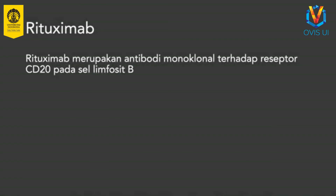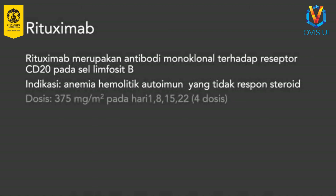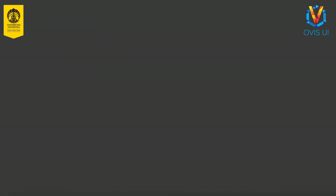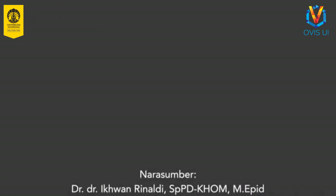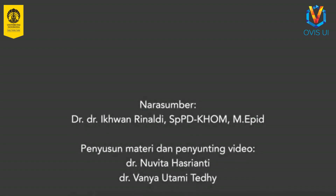Rituximab adalah antibodi monoklonal terhadap reseptor CD20 yang terdapat pada permukaan sel limfosit B. Rituximab dapat diberikan sebagai terapi lini kedua pada anemia hemolitik autoimun yang tidak respons terhadap steroid. Dosisnya adalah 375 mg per meter persegi yang diberikan pada hari ke-1, 8, 15, dan 22. Demikianlah video bagian ketiga mengenai tata laksana anemia. Terima kasih atas perhatian.